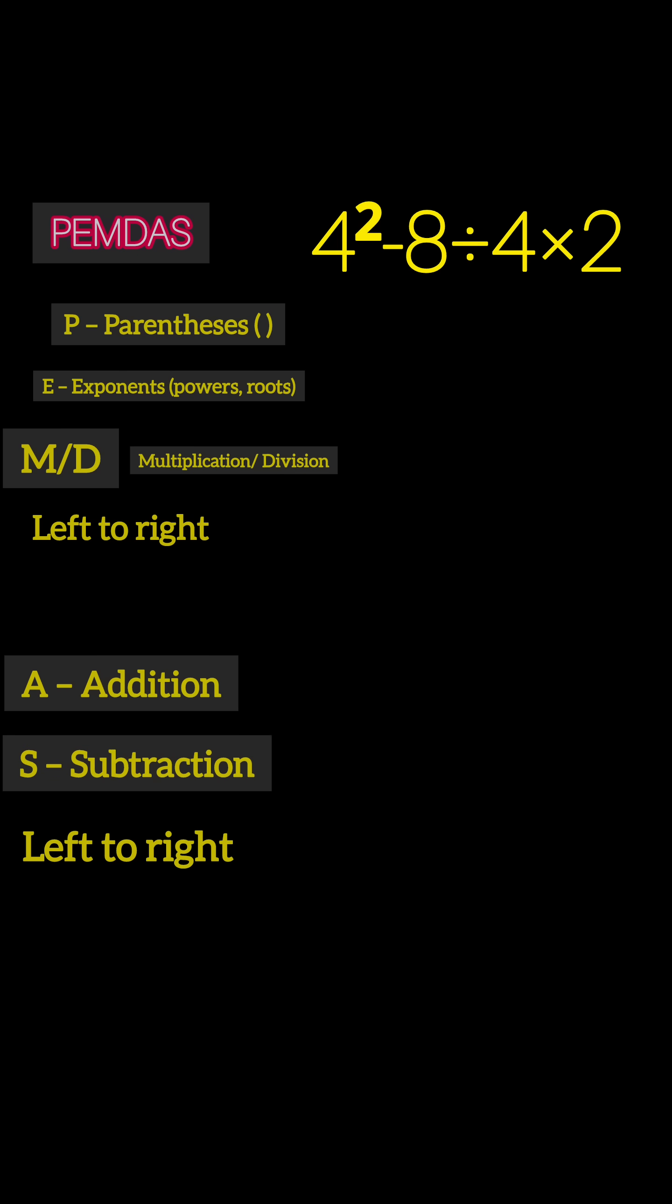They hear 'left to right' and forget about the order of operations altogether. So they just go step by step. They start with the exponent: 4² = 16. Then 16 - 8 = 8.